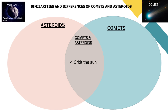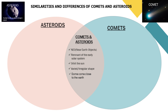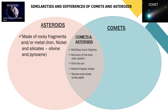They are both celestial bodies orbiting the sun, and some are straying close to earth or other planets. Both comets and asteroids have varied sizes, and they both reflect light from the sun at varying amounts depending on their size and composition.